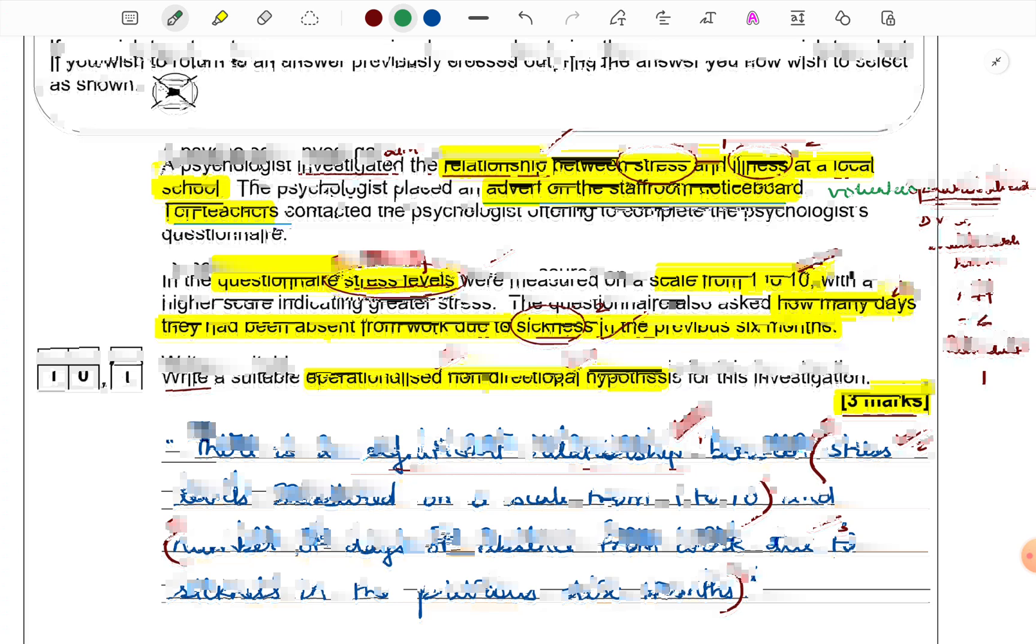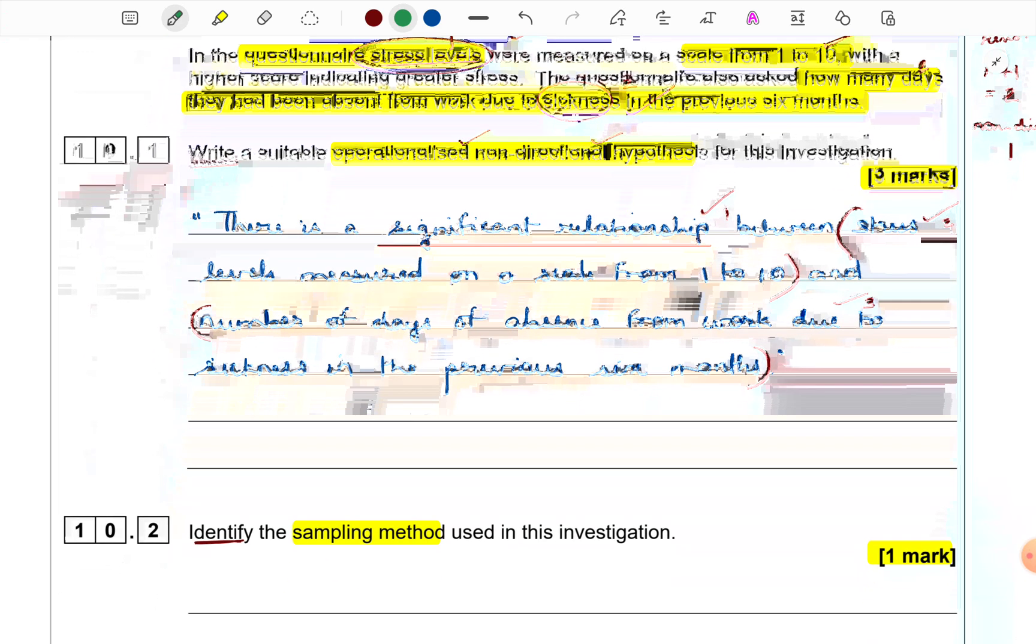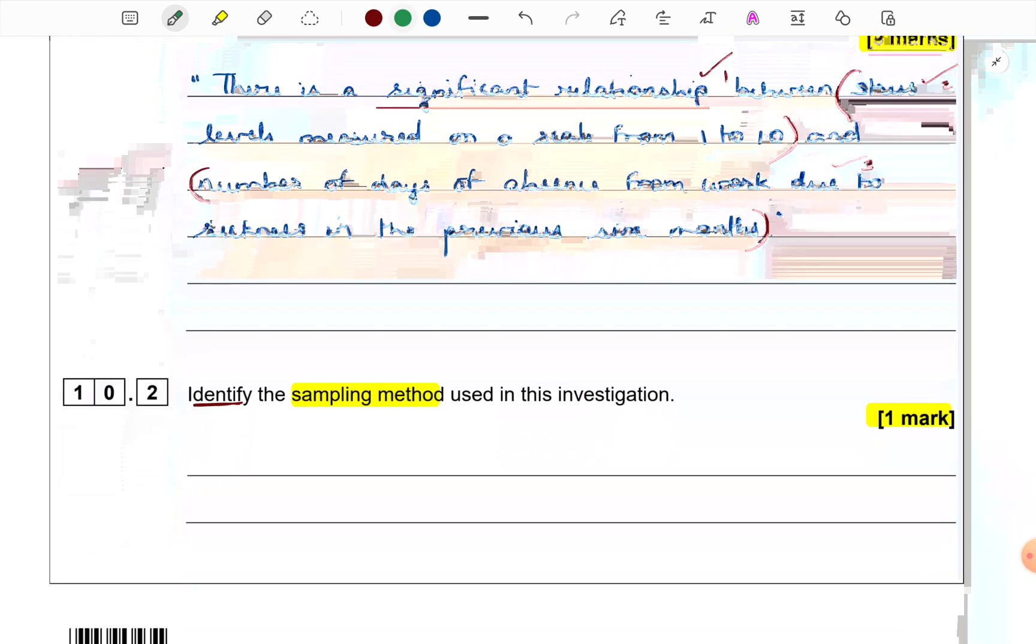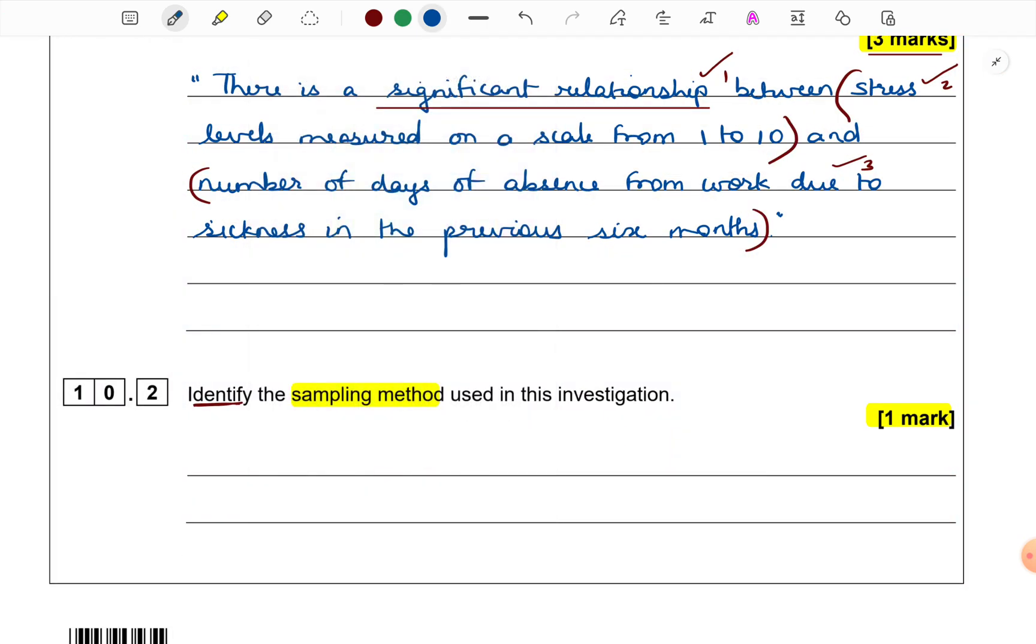This is typical description of volunteer sampling or self-selected sampling. Some announcement is made and then participants come forward. In this case, the teachers have read the announcement on the notice board and have come forward to participate. What we just have to write is volunteer sampling.